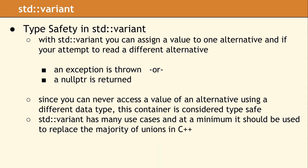The std::variant class provides improved type safety compared to a union. Since the variant tracks the current alternative, if you attempt to read from another alternative, the variant will either throw an exception or return a null pointer depending upon how you are accessing the value. Both of these results are easy to check for, and neither of them produces undefined behavior. So variant provides a clean and consistent way to check the type correctness in your code. Since there is no way to access an alternative using a mismatched data type, the variant container is considered type safe. We strongly suggest searching your code base and replacing as many unions as possible with std::variant. This process will turn hard-to-debug undefined behavior into simple errors and exceptions.